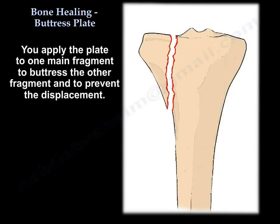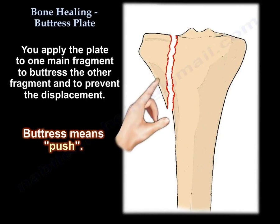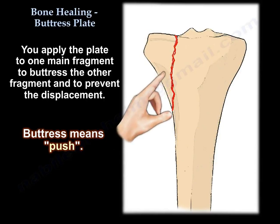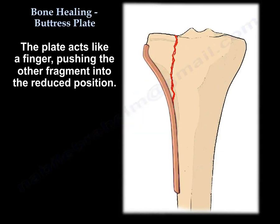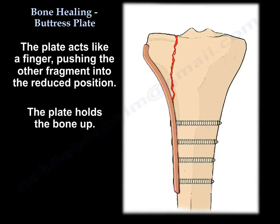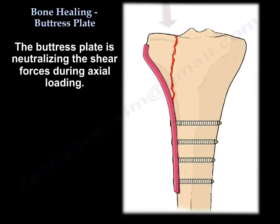You apply the plate to one main fragment to buttress the other fragment and to prevent displacement. Buttress means push — so the plate acts like a finger, pushing the other fragment into reduced position. The plate holds the bone up, neutralizing the shear forces during axial loading.